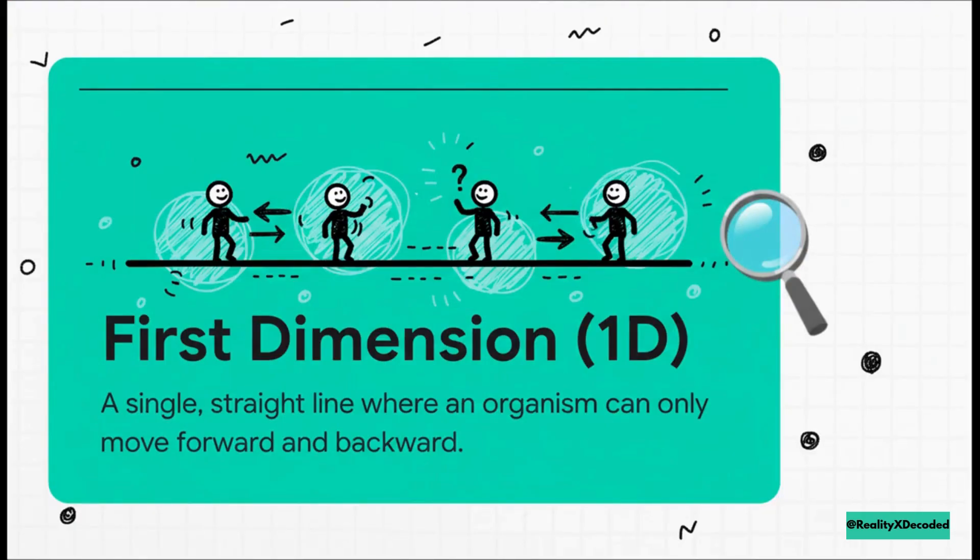dimension one. Imagine a world that is just a single, straight line. It has length, sure, but absolutely no width and no height. Any little creature living in this 1D universe could only move in two directions, forward and backward. That's it. Their entire reality exists on that single path.